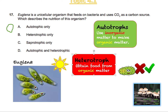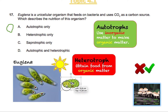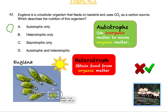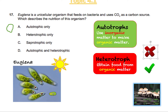Going back to euglena: we know it can be an autotroph, but technically it can also be a heterotroph because it eats bacteria. Bacteria is a living organism, so by definition euglena also fits as a heterotroph. If you were to put bacteria nearby, these euglena will wrap around the bacteria and digest them — like humans eating a steak. So technically they're both. Options A and B alone are incorrect because euglena could be both autotrophic and heterotrophic.